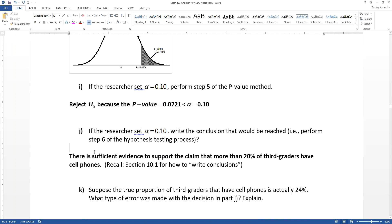That means that we will write our conclusion as there is sufficient evidence to support the claim. And then we write down what the claim is. More than 20% of third graders have cell phones. Just a little reminder, we went over in section 10.1 how to write conclusions. They have to be very specific. It has to be, there is sufficient evidence or there is not sufficient evidence. And you must write out that claim of the alternative hypothesis in words.